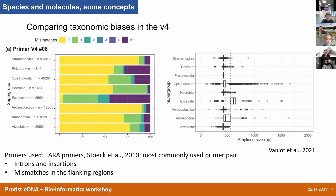Now I come to the problems. The primer pair I give as an example is for V4, and nowadays most people are sequencing V4. This pair of primers amplifies different groups of eukaryotes in a biased way. Most of the excavates are not correctly amplified, and in other groups the proportion really varies. This can be an issue if you're working in environments where you have a lot of these organisms.